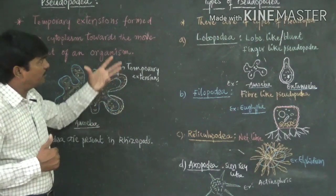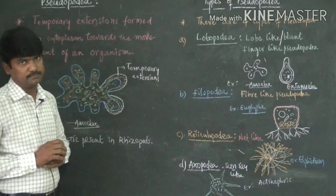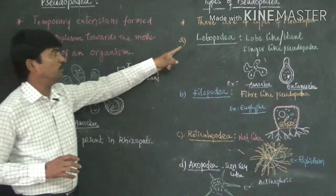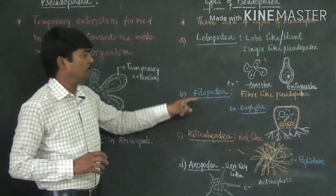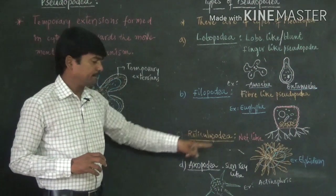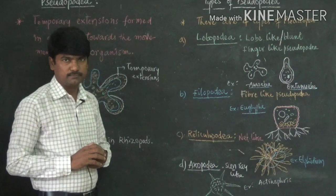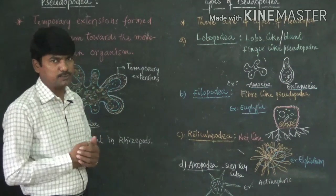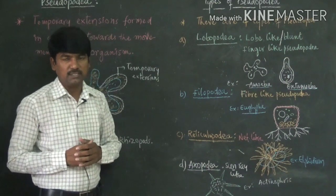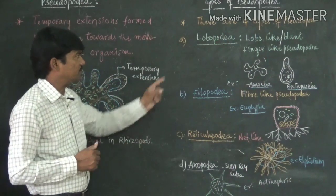There are four types of pseudopodia: lobopodia, filopodia, reticulopodia, and axopodia. These are the four different types of pseudopodia present in rhizopods.